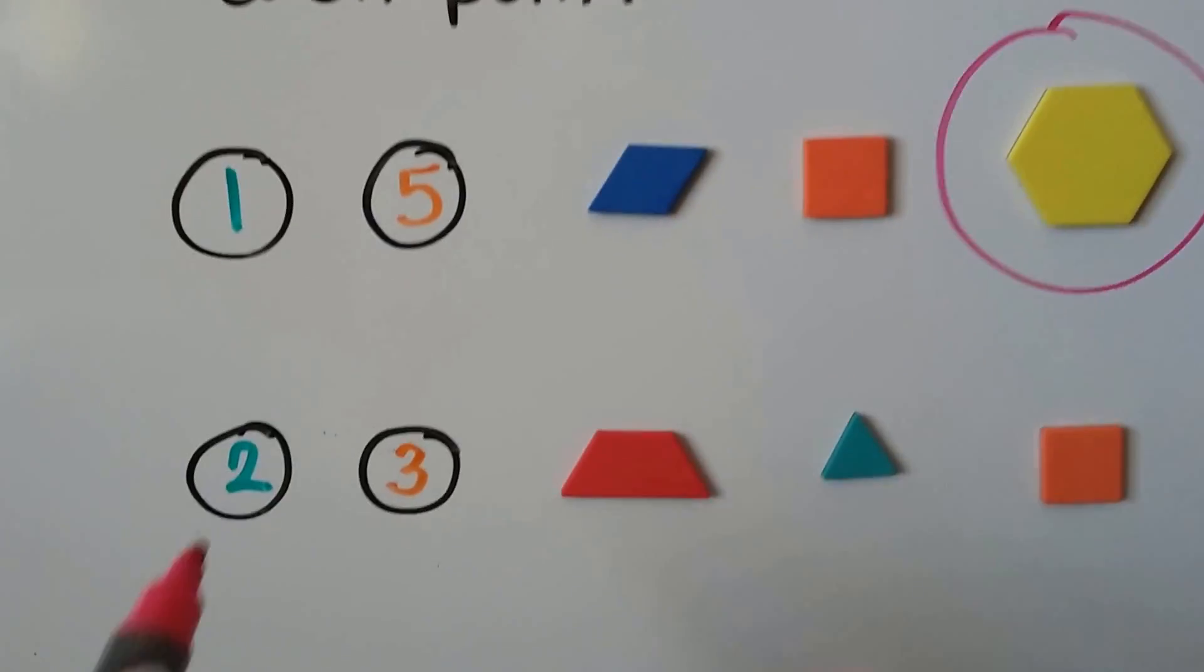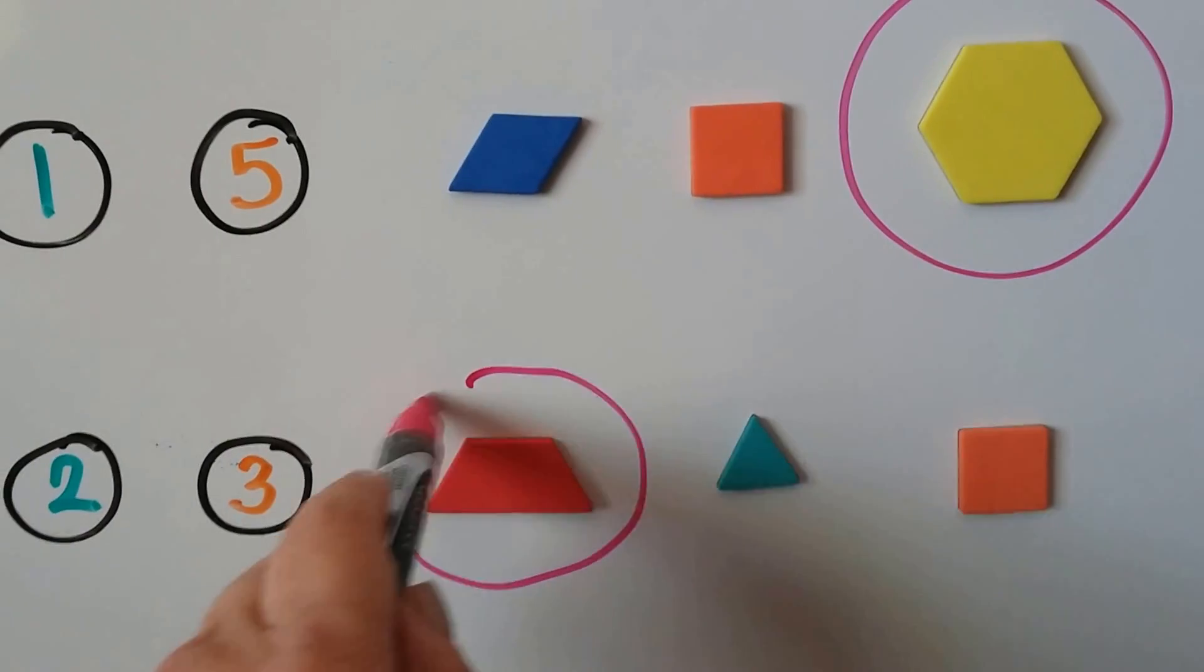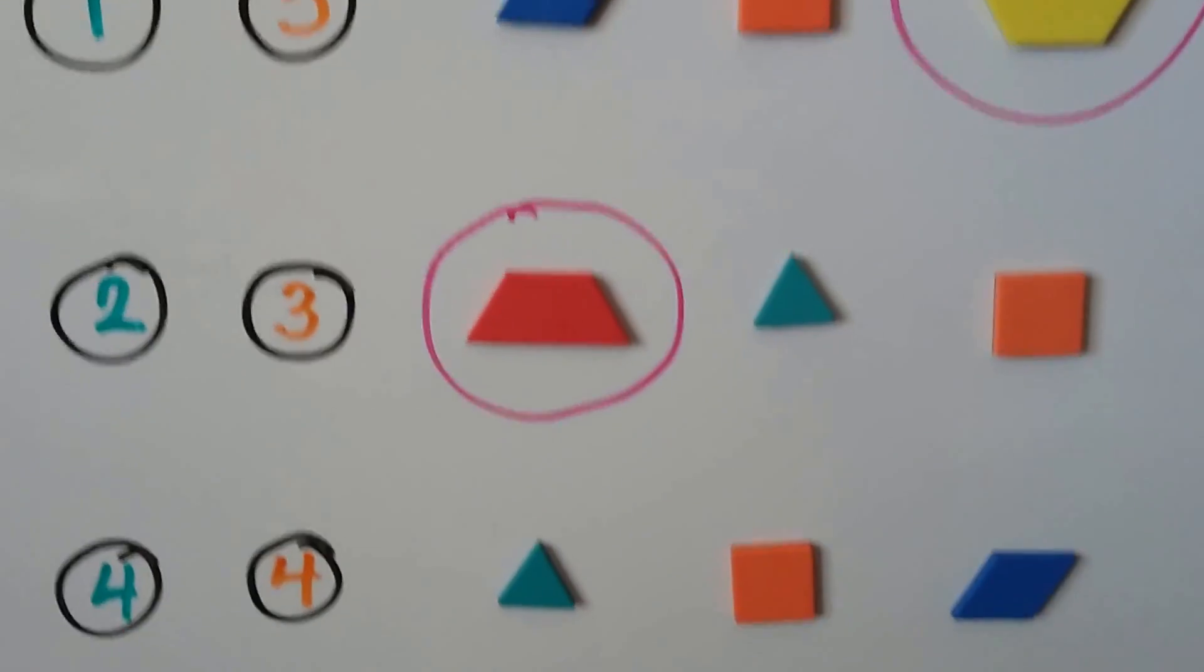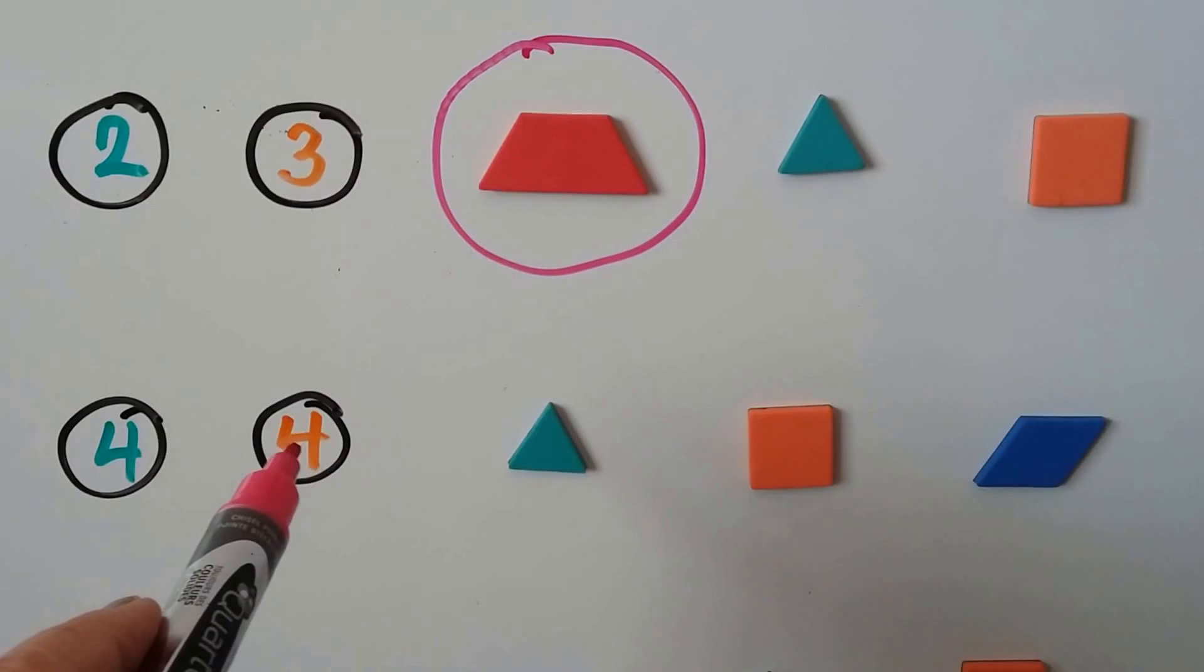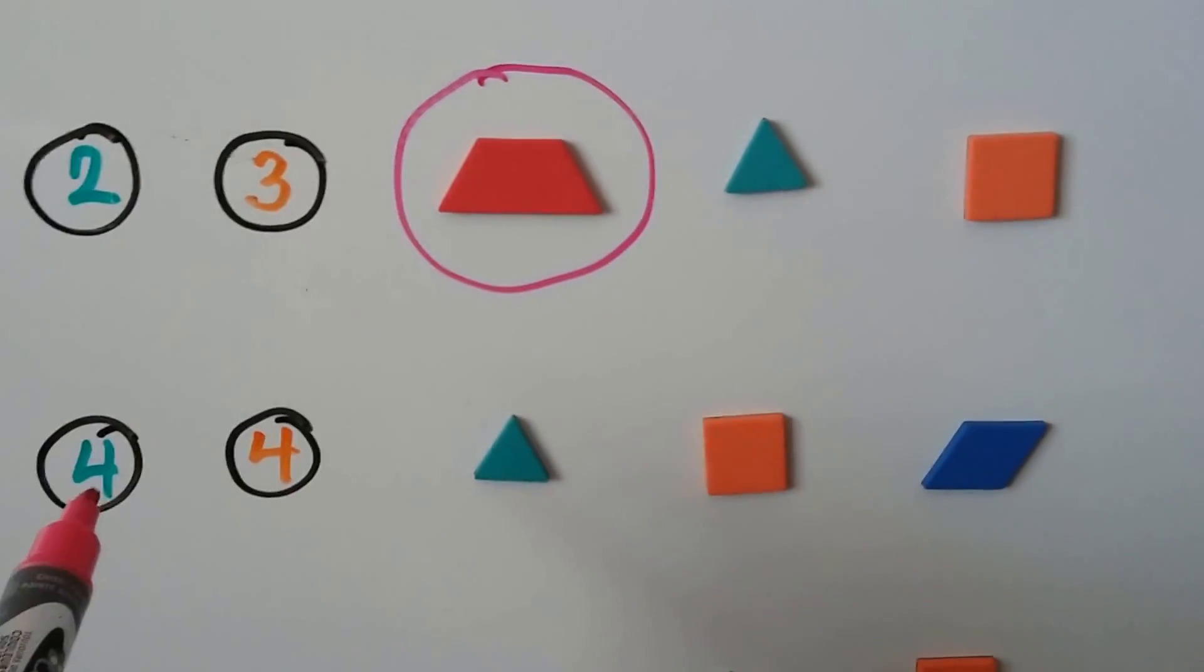Which one is at the green 2 and the orange 3? It's this red trapezoid, isn't it? Let's try another one. The green 4 and the orange 4. Where do they meet? Which shape is at that point?